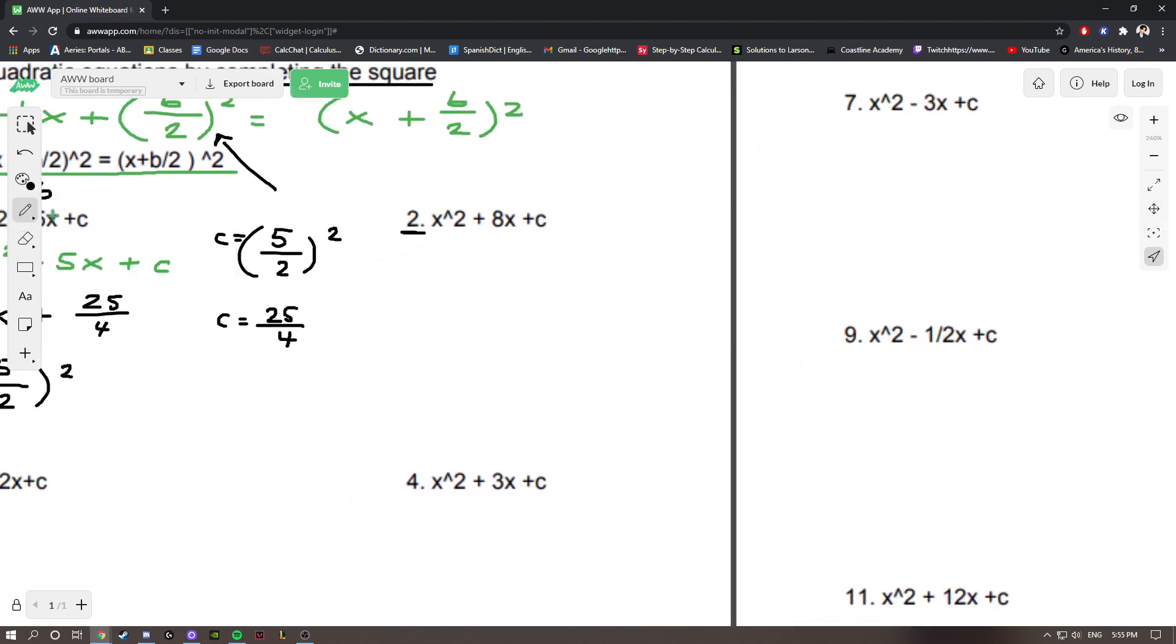Alright, moving on. We have x squared plus 8x plus c. Now, obviously, we're trying to find what c equals, but to do so, we need to know what our b value is. And our b value is 8 in this problem. So, if we work down here, c is equal to 8 divided by 2, this whole thing squared.